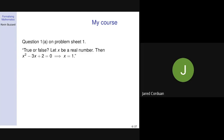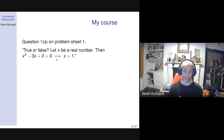Here's a great example — the first part of the first problem sheet I was giving undergraduates. I was playing with this over the summer before the course started, summer of 2017. I was at UC Berkeley, supposed to be doing number theory, but completely distracted. True or false: let x be a real number, then x² − 3x + 2 = 0 implies x = 1. The point is I'm trying to teach students what the implication symbol means.